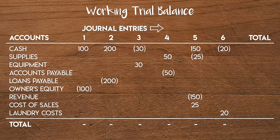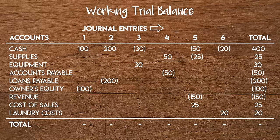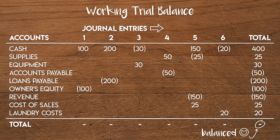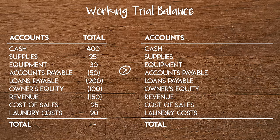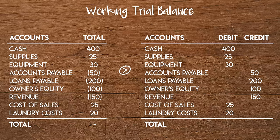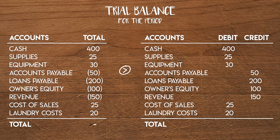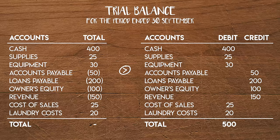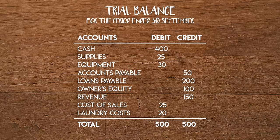Now that we have all of our September journals written out, we can take the totals for each account. The sum of these totals is zero — a good sign because it shows that our trial balance is balanced. Let's reformat our working trial balance to show debits and credits in separate columns and rename it to 'Trial Balance for the period ended 30th of September.' The total of accounts with a debit balance is $500 and the total of accounts with a credit balance is also $500. So here we have our final trial balance for the September accounting period.